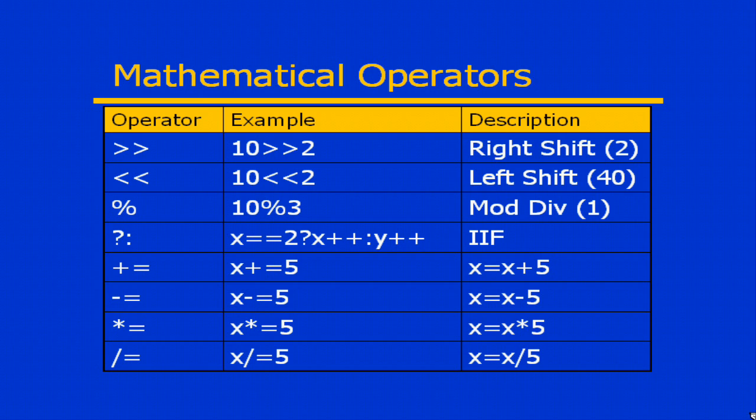I also have a ternary operator, a question mark and a colon. This is basically like an immediate if. I have an expression that I can evaluate, and then I can do two different things, depending on whether that expression evaluates the true or false. So the question here is, if x is equal to 2, then x plus plus. Otherwise, y plus plus. Do one thing if it's true, another thing if it's not.